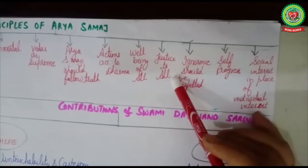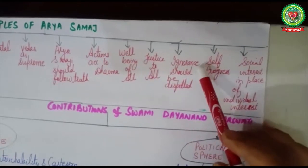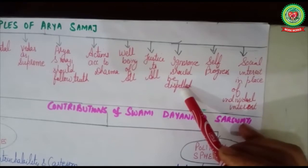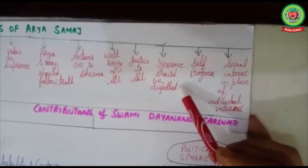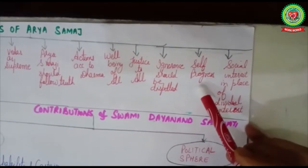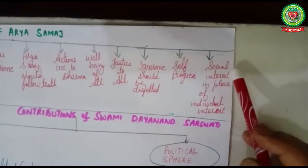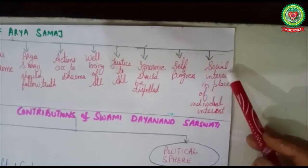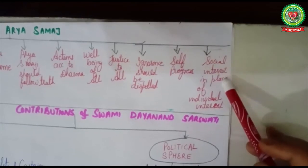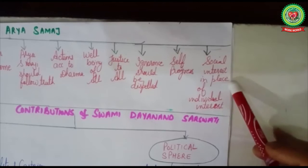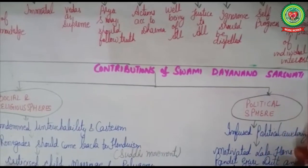Arya Samaj believed that justice should be done to all with no exploitation on any basis. Ignorance should be dispelled and it is every person's duty to ignite the light of knowledge within. It is also each person's responsibility to do self-progress. Lastly, Arya Samaj believed that if we must choose between social interest and individual interest, we should always give importance to the social interest — the interest of society.